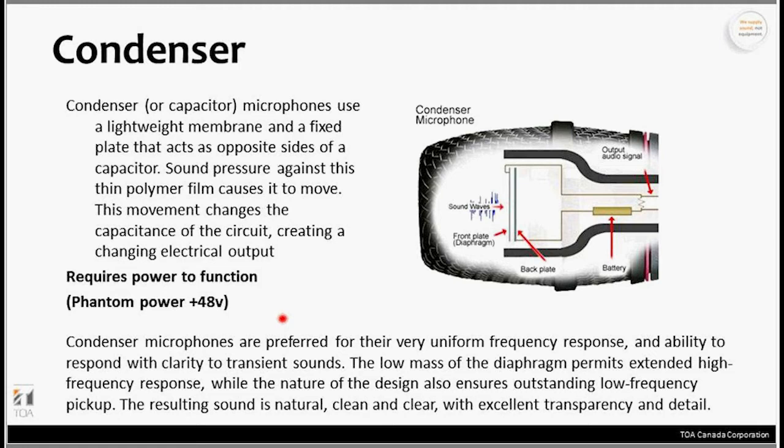Condenser microphones are preferred because they have great frequency response and the ability to respond with clarity to transient sounds. The low mass of the diaphragm permits extended frequency response, as well as outstanding low-frequency pickup. The resulting sound is natural, clean, and clear with excellent transparency and detail — generally a more accurate microphone than a dynamic.